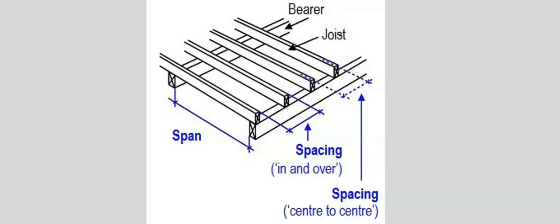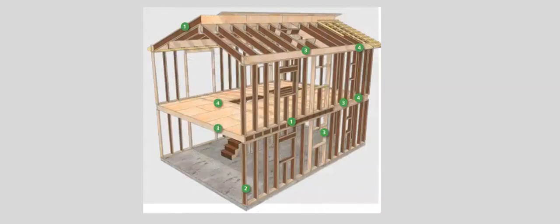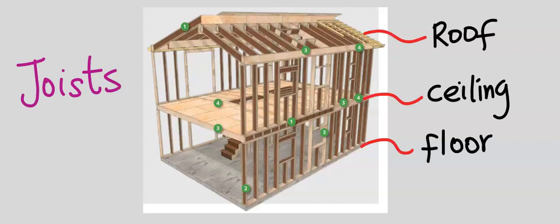Joists are usually horizontal members. Any vertical member that looks like a joist is known as a stud. In construction, joists can be used on the roof, for the ceiling, or on the floor.